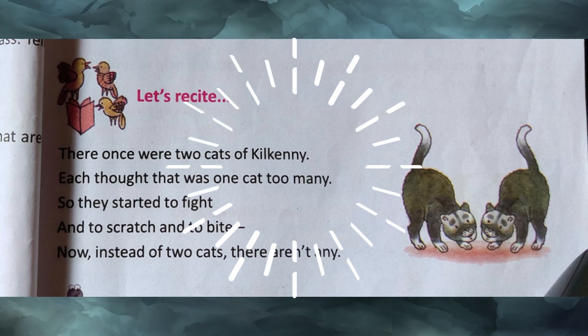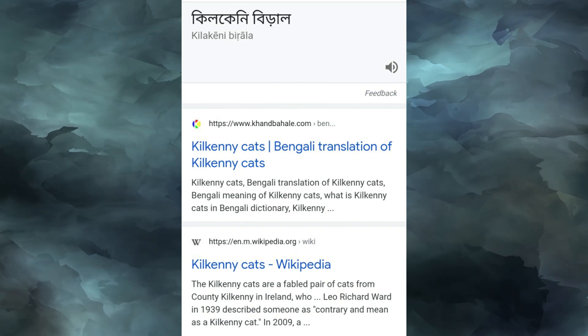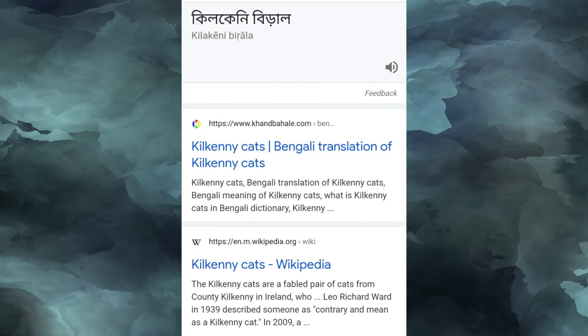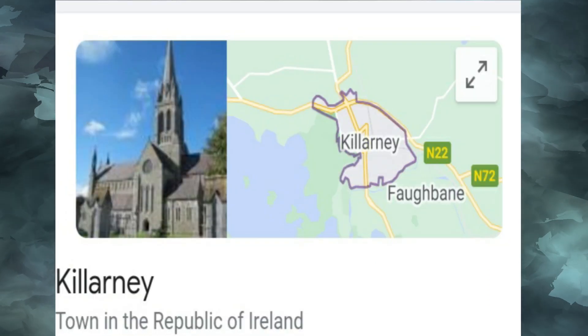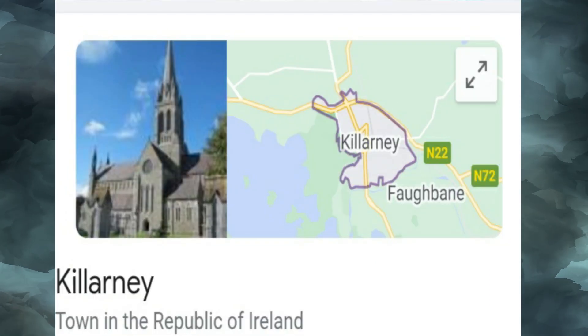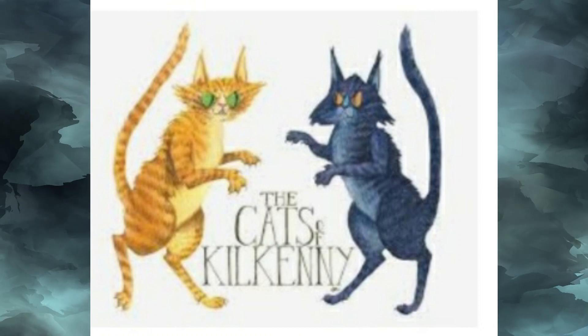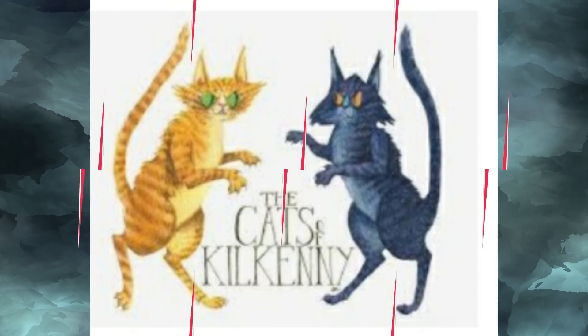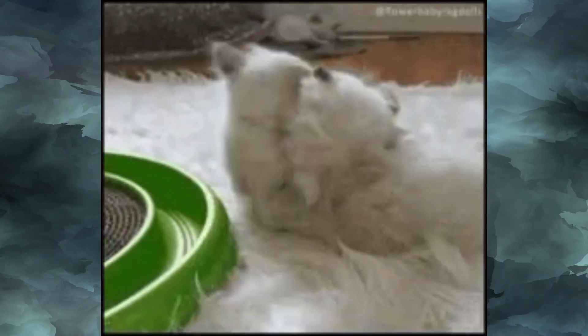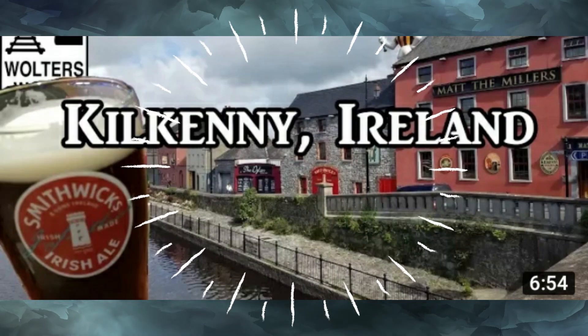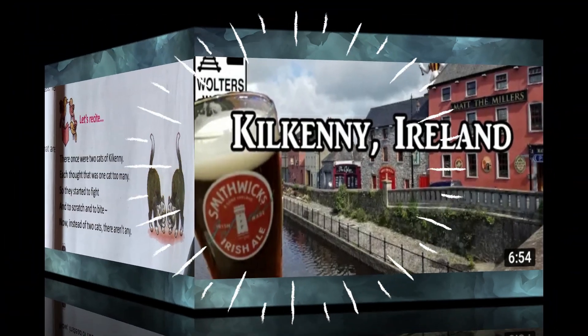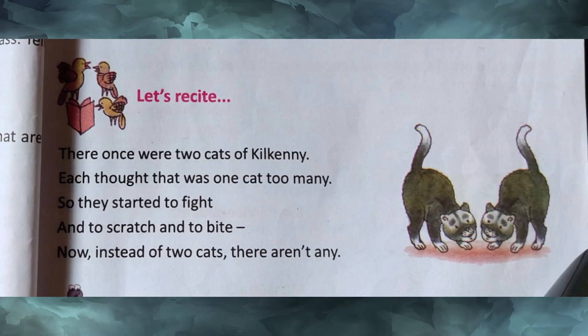Here is the limerick of Kilkenny cats. Kilkenny is a famous medieval town in the Republic of Ireland. Once there were many cats — they fought and all died outside the town Kilkenny. It may be a symbolic poem. The people of Kilkenny fought and died. Now recite with me.